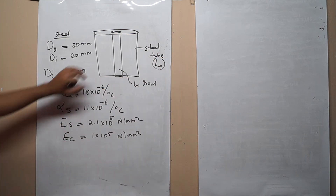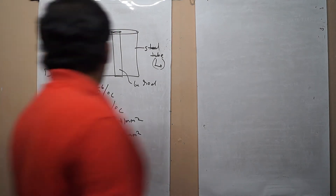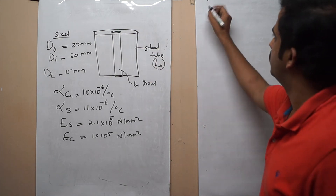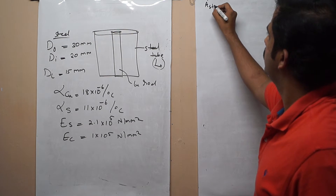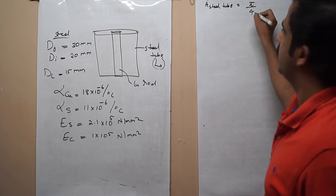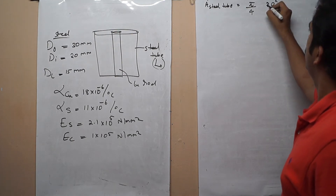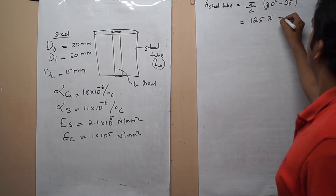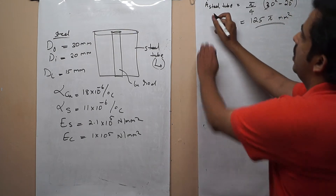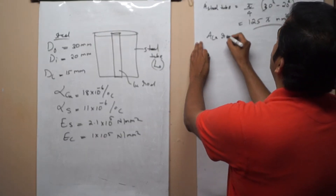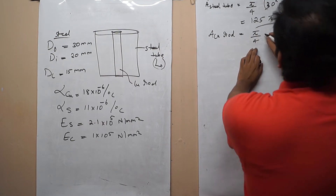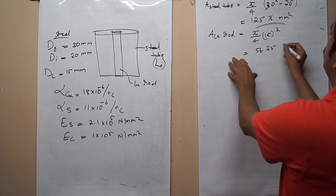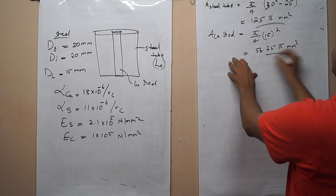The length of the copper rod and the steel tube are the same — let it be L original. Steel tube length is equal to length of the copper rod. Now we can calculate the areas. Area of the steel tube is equal to π/4 × (30² − 20²) = 125π mm². Area of the copper rod is equal to π/4 × 15² = 56.25π mm².